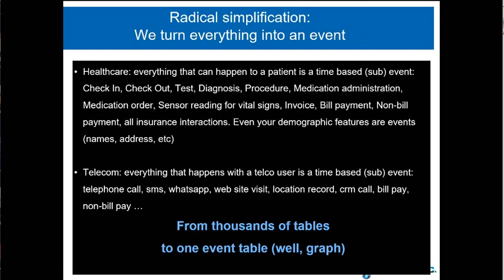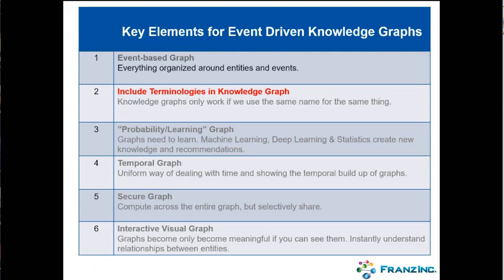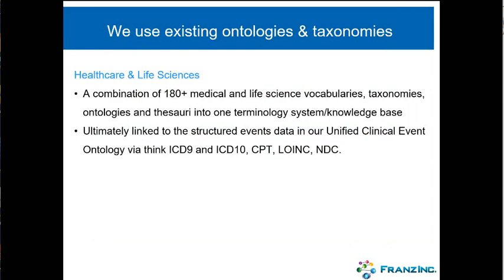If you build a knowledge graph and don't build in all your terminology systems, you haven't achieved anything. For every domain we work in, we use existing ontologies and taxonomies or build our own. In healthcare, there are more than 600 terminology systems of pretty reasonable quality. We've combined about 180 of those into one medical taxonomy system — taking things like MeSH, SNOMED, and medication terminology systems and cross-linking them together so there's only one way to go up and down the hierarchy tree.